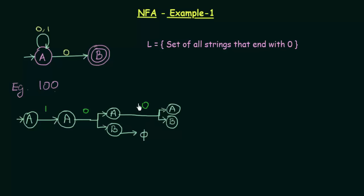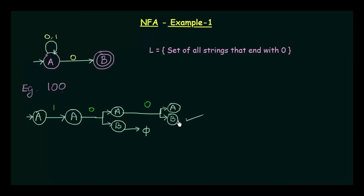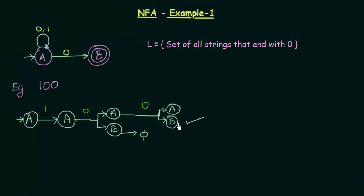At the end of the string — 1, 0, 0 — when I reach the end, my current states are A and B. Is A an accepting state? No. But is B an accepting state? Yes, B is a final state. So this string will be accepted. If we are in either of the states where at least one is an accepting state, then the string is accepted. We will write this down formally after seeing one more example.